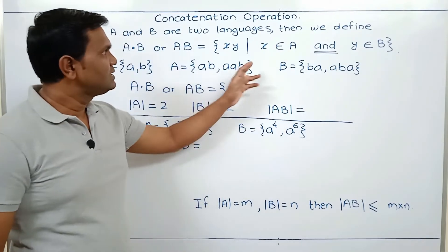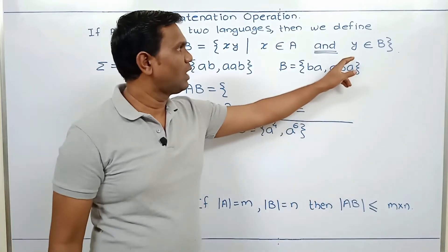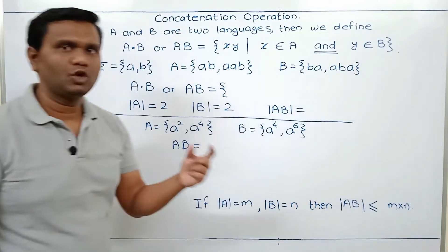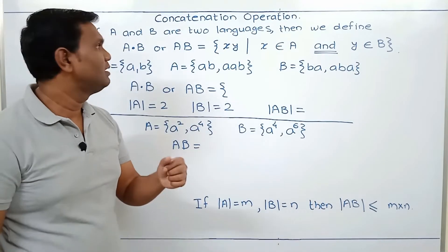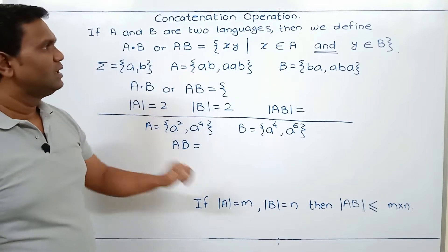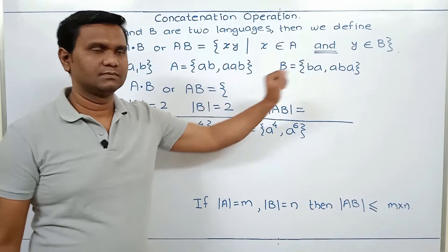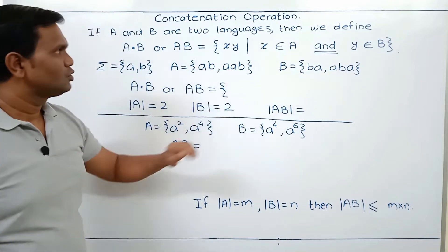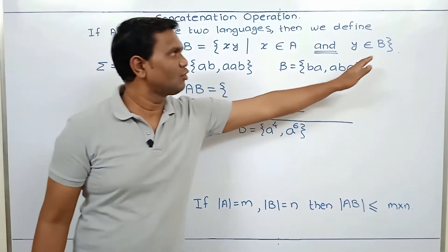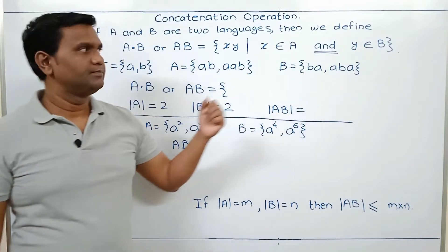We take one string X from A and one string Y from B. We join them and the resultant string will be a string of AB. Remember that this is an AND condition — you must get one string from A and one string from B, and then you can join them.